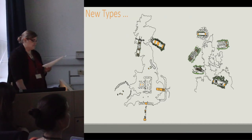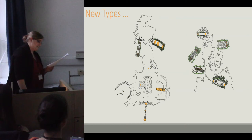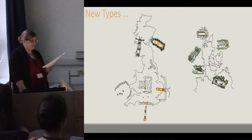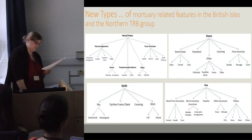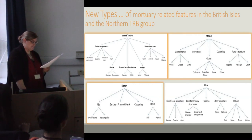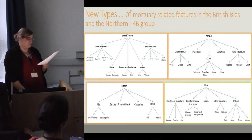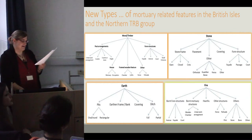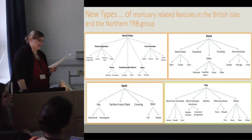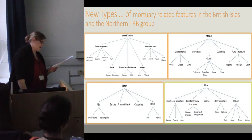This typology had to be detailed as well as flexible. I tried to combine the two approaches of Kossian and Kinnis and have differentiated four major categories. The first three include features according to their building material: earth, wood, and stone. The fourth category, fire, relates to activities or events at these features that are so prominent in the use and development of these sites that it is worth including as a significant type of its own.